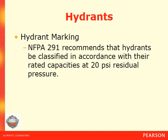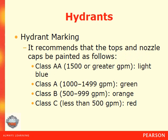NFPA 291 recommends that hydrants be classified in accordance with their rated capacity at 20 PSI residual pressure. A Class AA hydrant is capable of supplying 1,500 gallons per minute or greater and has a light blue top. A Class A green top can supply between 1,000 and 1,500 GPM. A Class B orange top supplies 500 to 999 gallons per minute. A Class C red top supplies less than 500 gallons per minute.